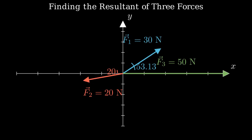Let's start by finding the components of f1. The x component is f1 cosine of 53.13 degrees, which equals 18 newtons. The y component is f1 sine of 53.13 degrees, which equals 24 newtons.